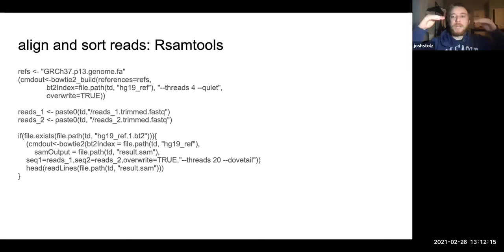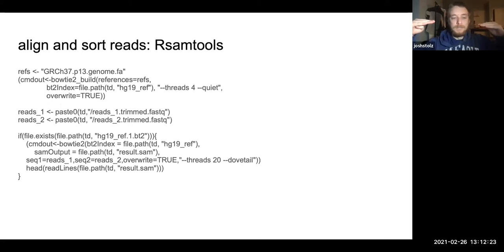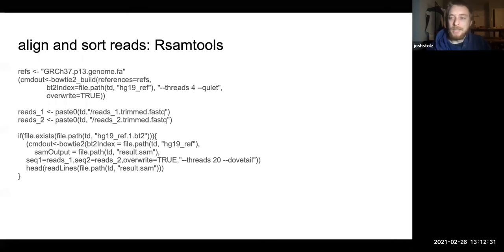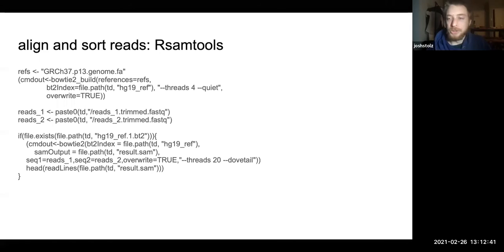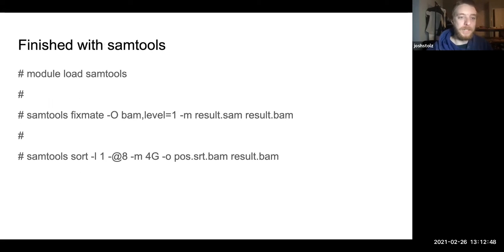Dovetail means that paired-end reads can't overlap in terms of where they map — that's usually a bad sign. There's not really a reason we would expect overlap in chromatin data, so we just drop all pairs that aren't properly separated. Then, because running in R was too slow, I did the next two steps at the command line.